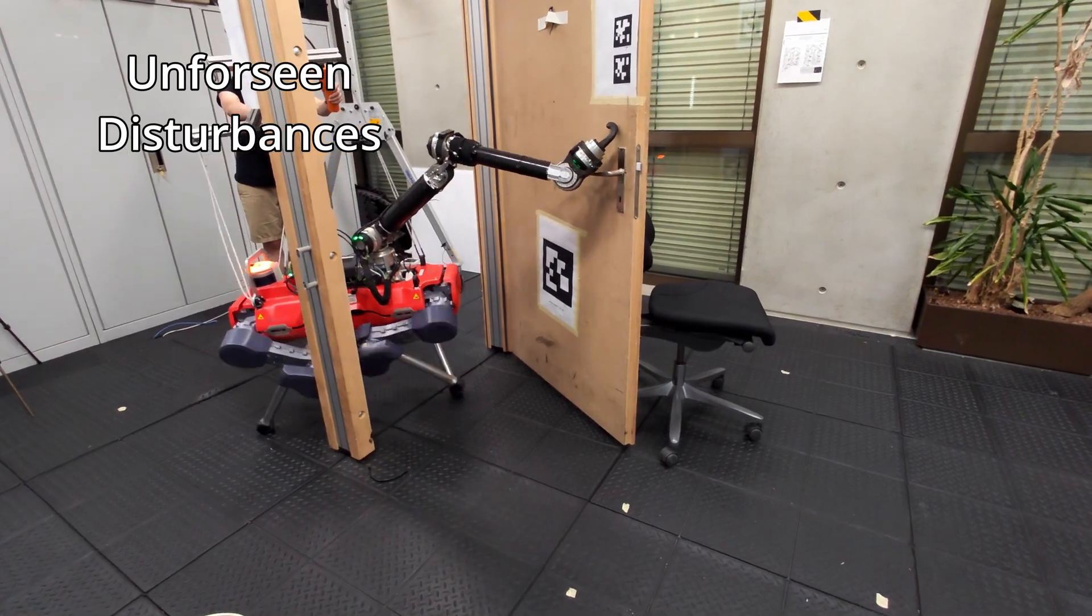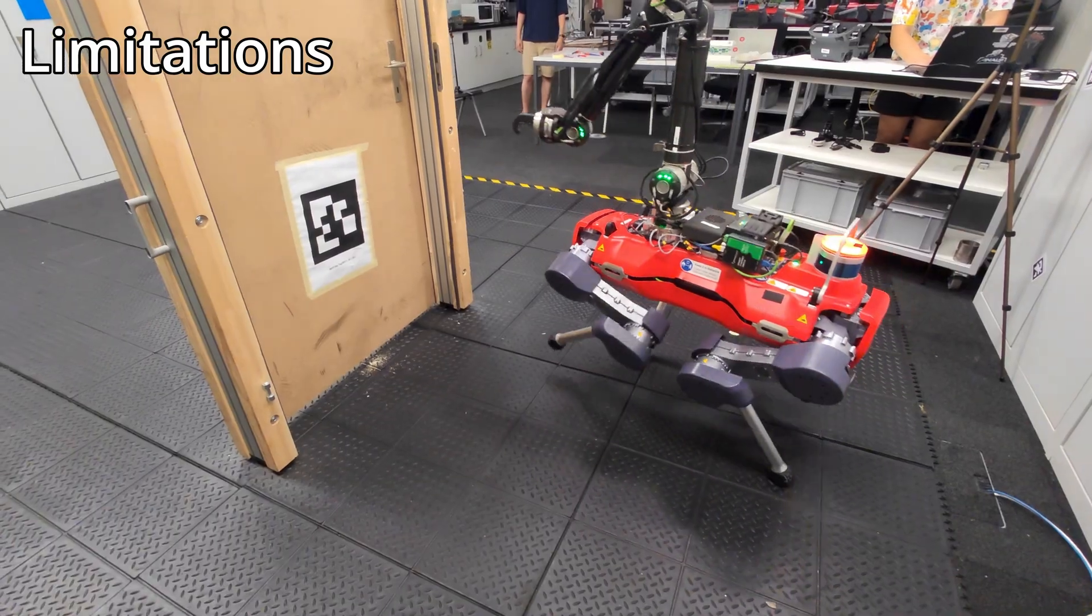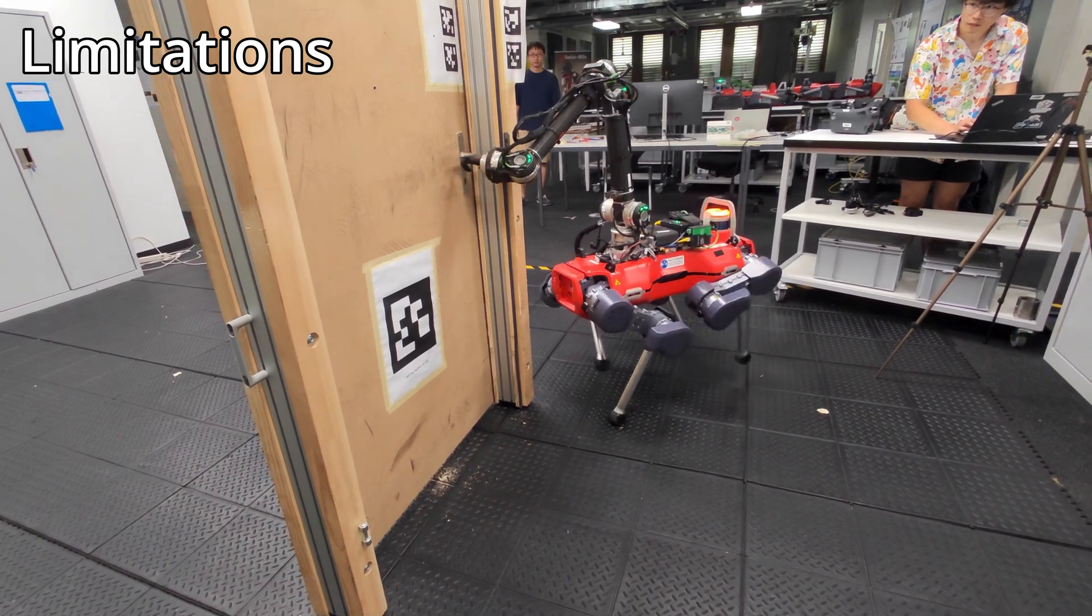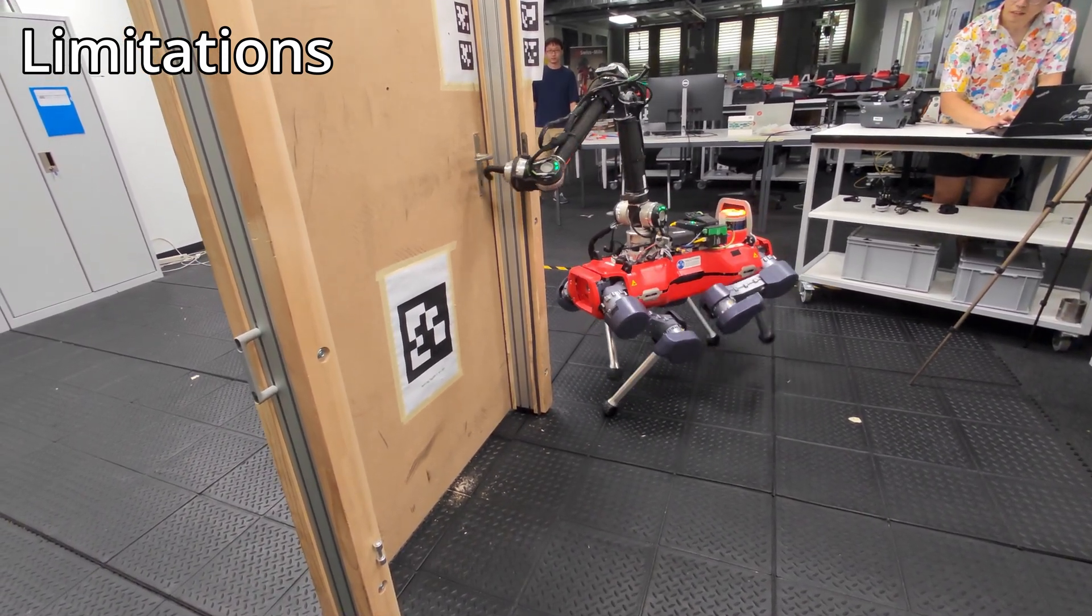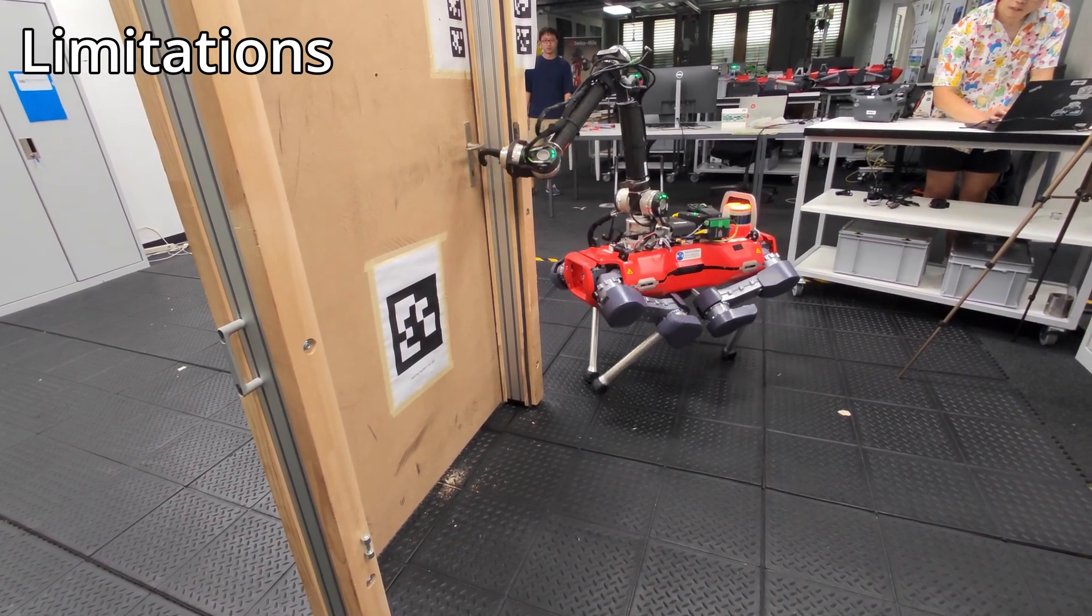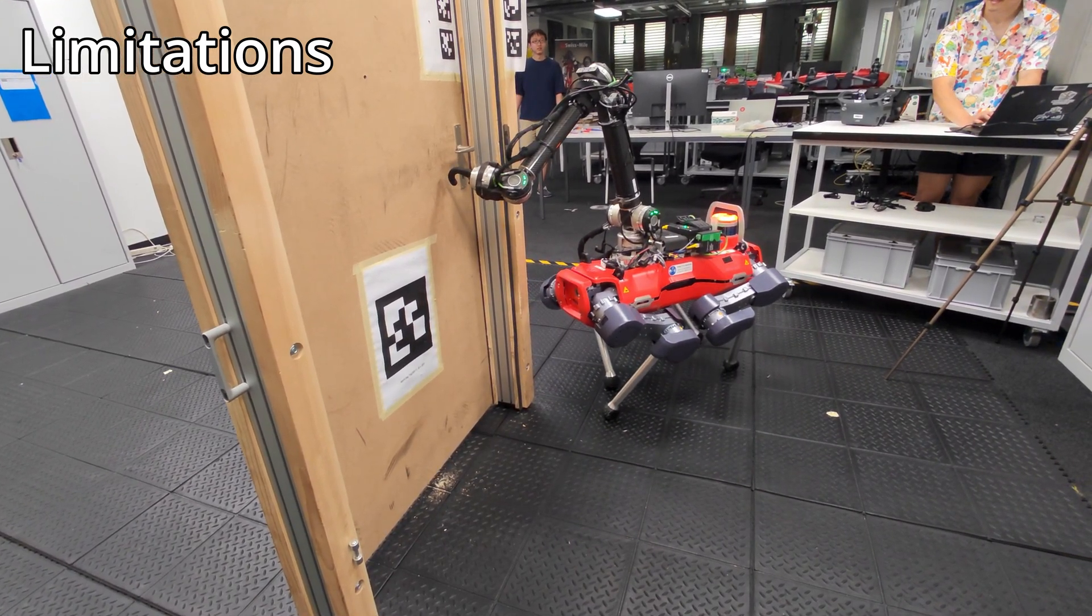In the following clips, we demonstrate some limitations in our current implementation. Our current experimental setup relies on off-board sensing to measure the location of the door handle relative to the robot, which is sensitive to errors in the robot's state estimation. Because of this, a common failure case is the robot missing its grasp due to inaccurate handle location measurements.